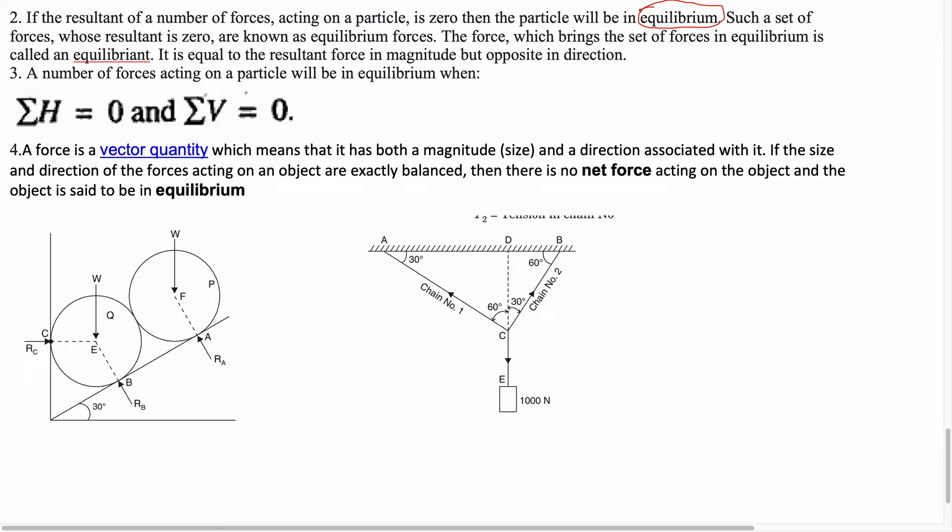Important points, students. Resultant force and equilibrium are related — when the resultant force is zero, that particle is in equilibrium. The resultant of all forces acting on a particle being zero is the condition for equilibrium. The resultant force is equal to zero — very simple.